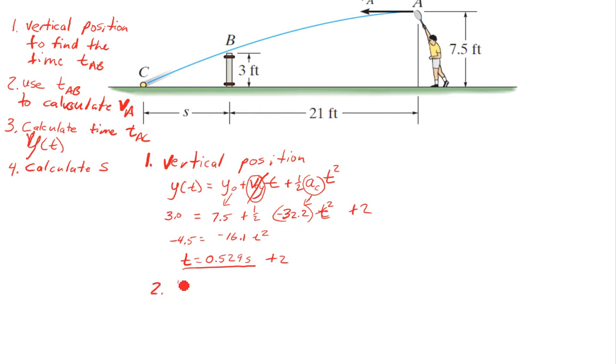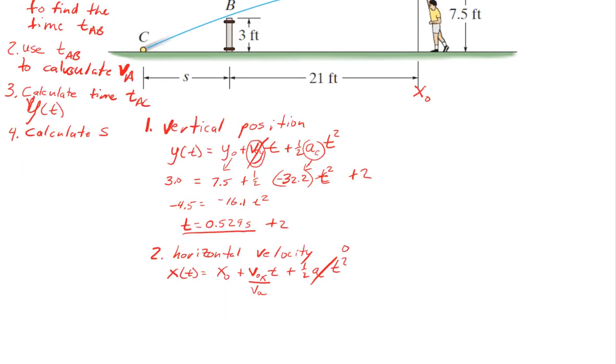Step two, horizontal velocity. So here we have a choice how we want to define our coordinate system. I'm going to set this as x0 here. So this is going to be 21. So x(t) equals x0 plus V0x times t plus one half AC t squared. And in this case that goes to 0. There's no acceleration in the x direction. This is our VA and this is our 0.